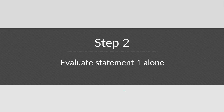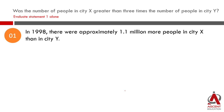Let us look at Statement 1. Statement 1 says that in 1998, there were approximately 1.1 million more people in city X than in city Y. If city Y has 1 million people, then city X, according to the statement, would have 1.1 million more people, so city X would have 2.1 million people. Is X greater than 3Y? Three times Y is 3 million, and 2.1 is not greater than 3 million. So the answer is no.